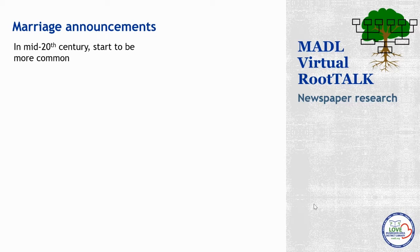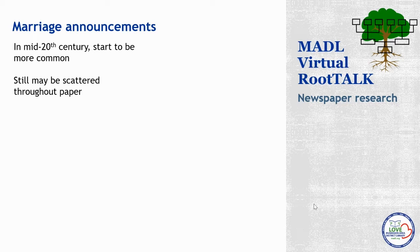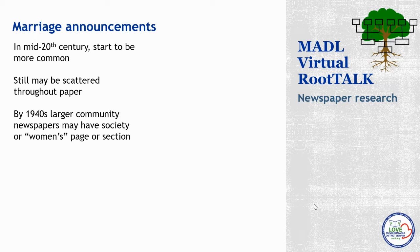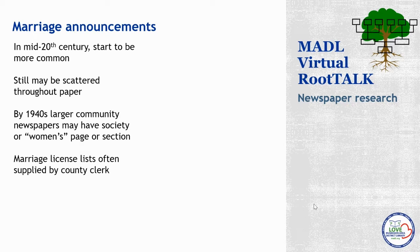In the mid-20th century, marriage announcements become much more common and more descriptive, getting a lot more detail about the event itself — maybe what the bridal party is wearing, what the dress looked like — giving you a little more insight into the character or even physical appearance of your early family ancestors. They're still going to be scattered throughout the paper. Women's pages become more common about the 1940s, when you start seeing that grouping of information all in one place. Marriage license lists are now more commonly supplied by the county clerk. Remember, a marriage license list or engagement announcement is not proof of the marriage, but it's a great starting point.